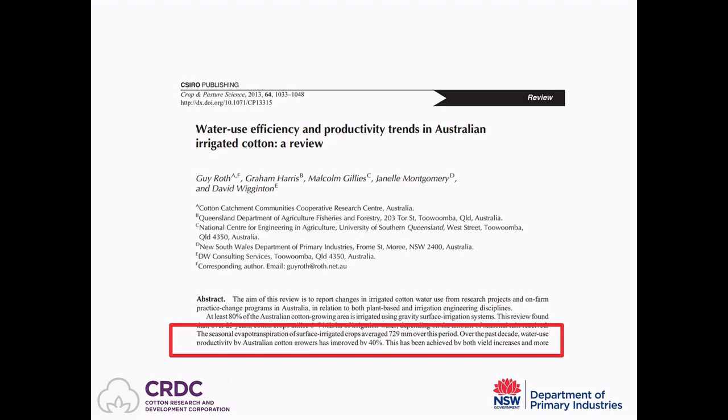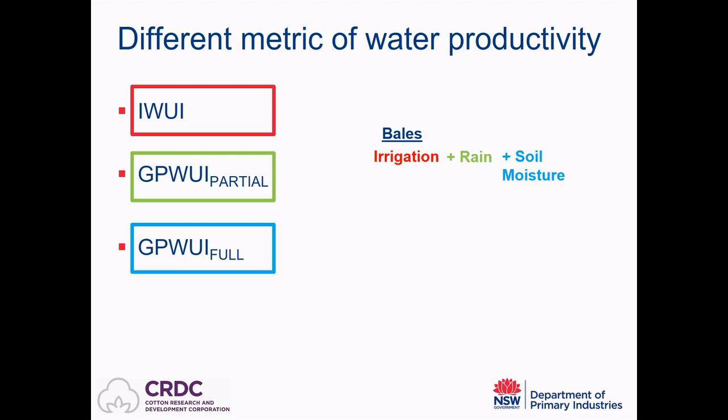When we talk about water productivity, it's the number of bales of cotton per megalitre of water. The amount of water we're interested in depends on the type of questions we're asking. If we want to know how much water it takes to grow cotton, we'd want to know all of the water the cotton crop uses: irrigation water, rainfall, and any soil moisture stored in the crop root zone. When we have all of those pieces together, we can measure what's called the gross product water use index, or GPWUI.